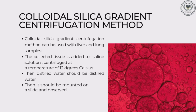The next method is the colloidal silica gradient centrifugation method. This method can be used with liver and lung samples. The collected tissue is added into saline solution and centrifuged at 12 degrees Celsius, then distilled water is added. The sample is then mounted on a slide and the diatoms are observed.